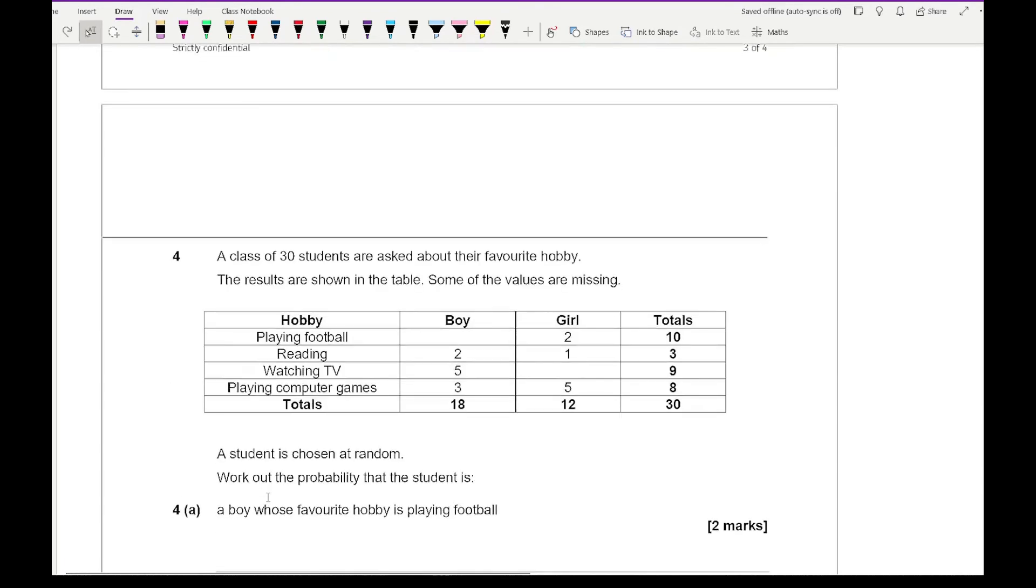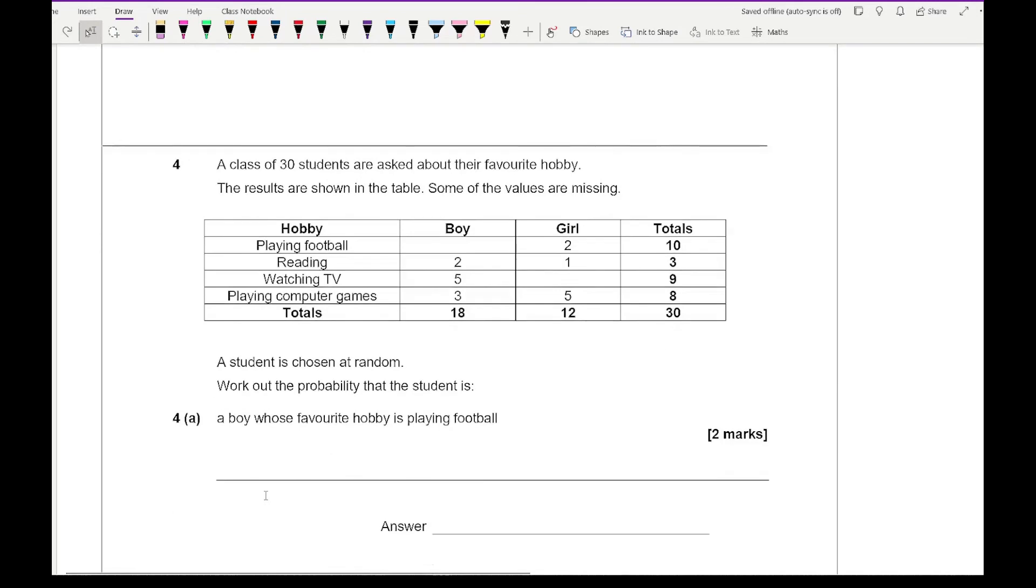Moving on to question 4, it says a class of 30 students are asked about their favourite hobby. The results are shown in the table. Some of the values are missing. A student is chosen at random. Work out the probability that the student is... Now before we even get started, let's work out what these missing values are. If the number of girls are 2 and there are 10 people who chose football, that means this is 8. If 9 people chose watching TV and 5 are boys, then the girls are going to be 4.